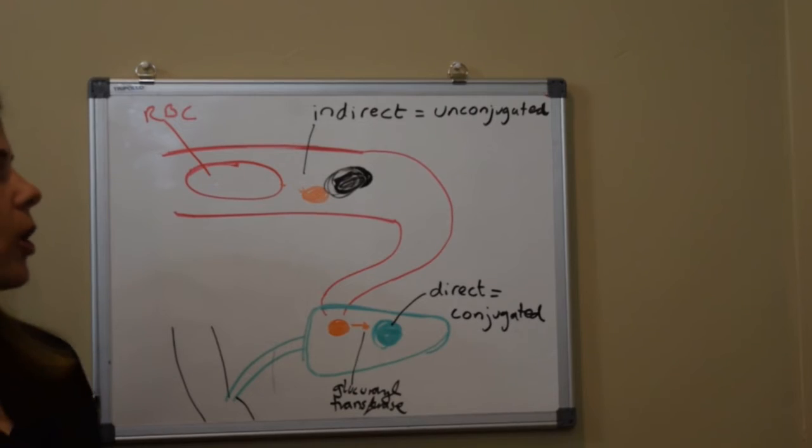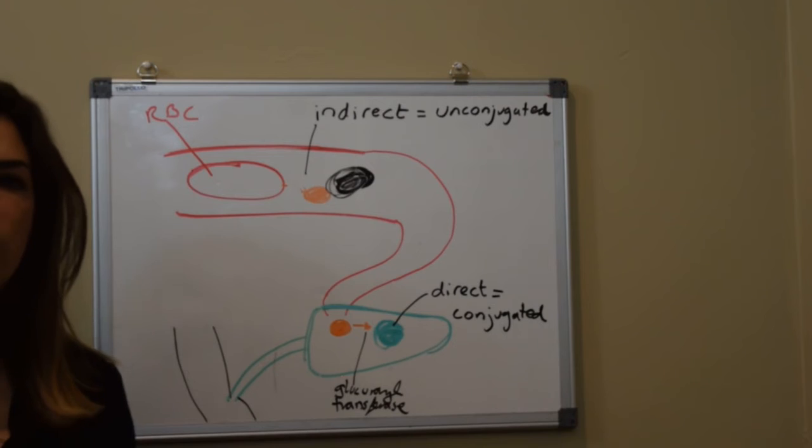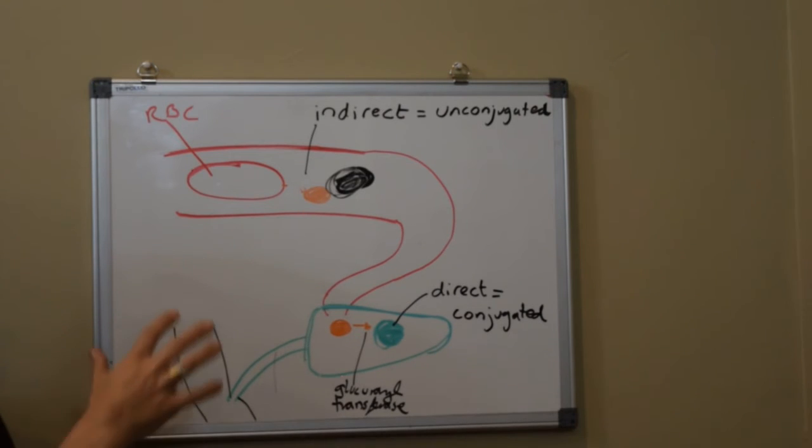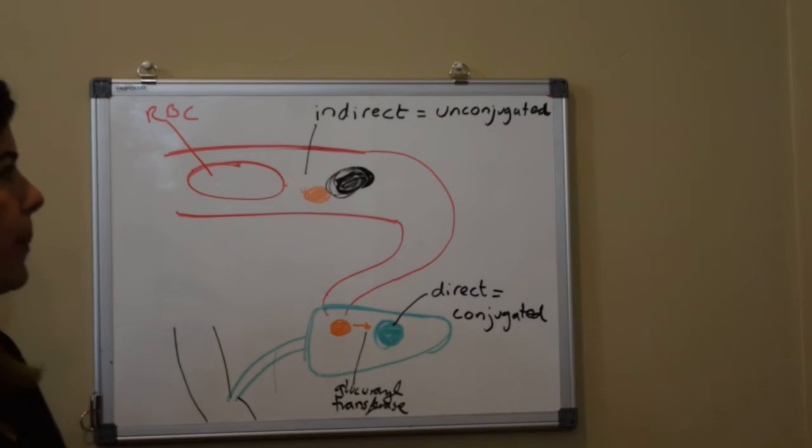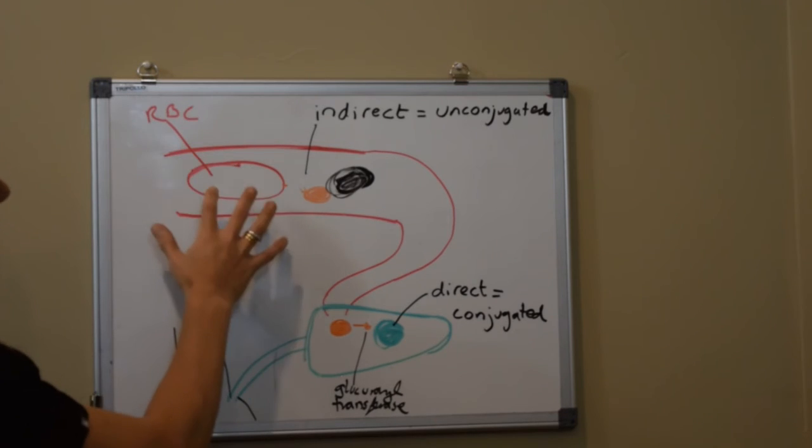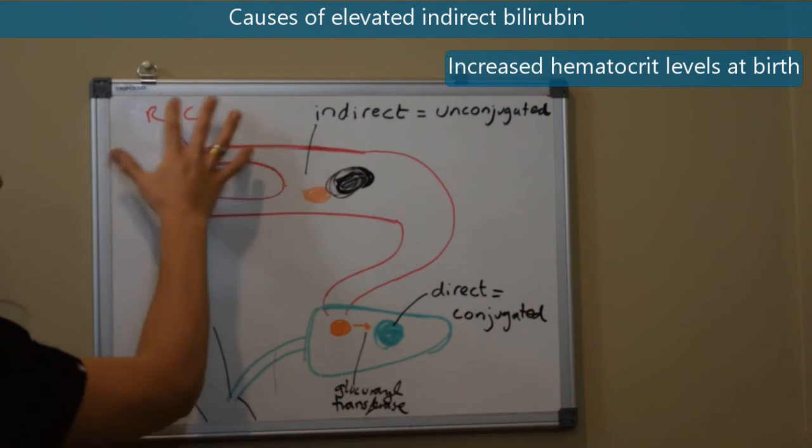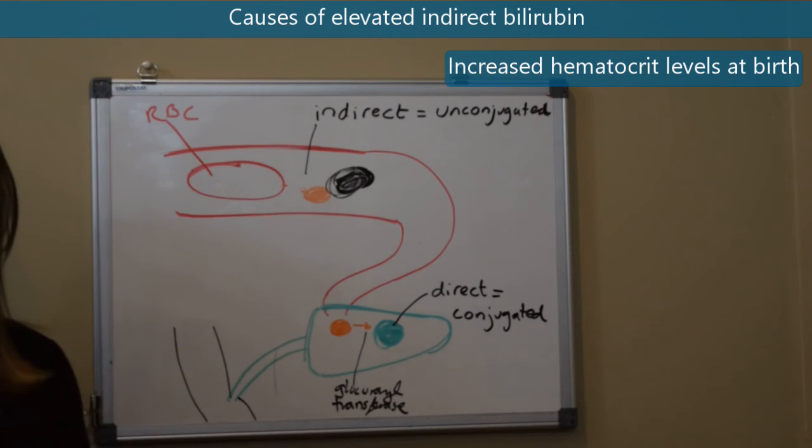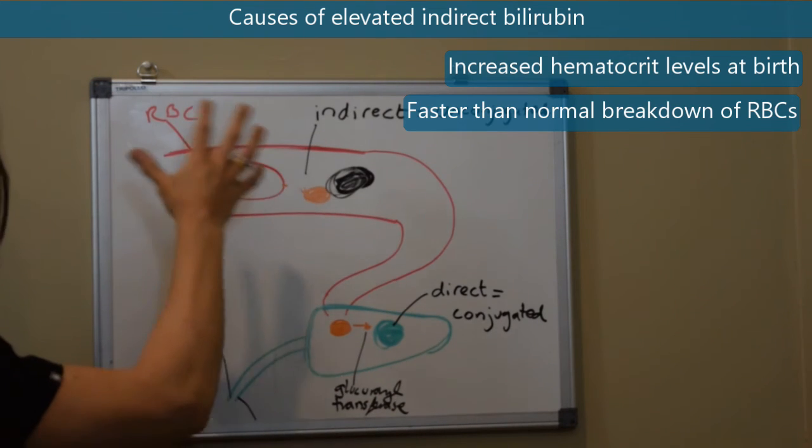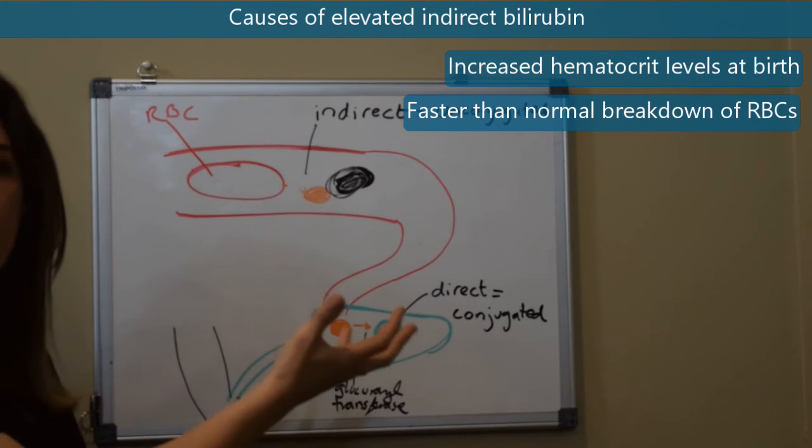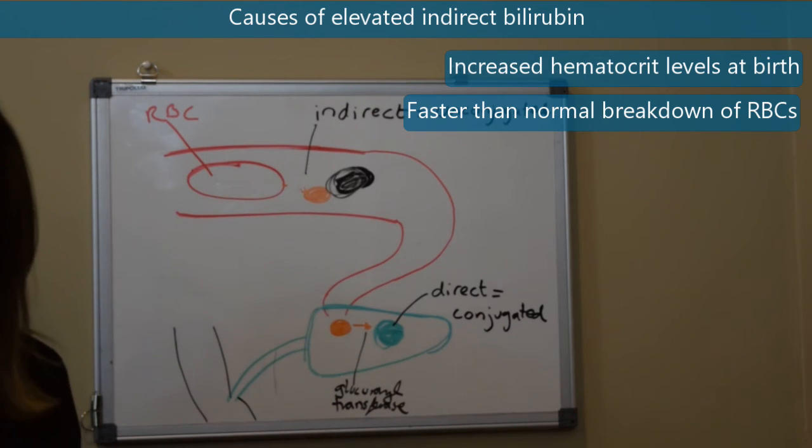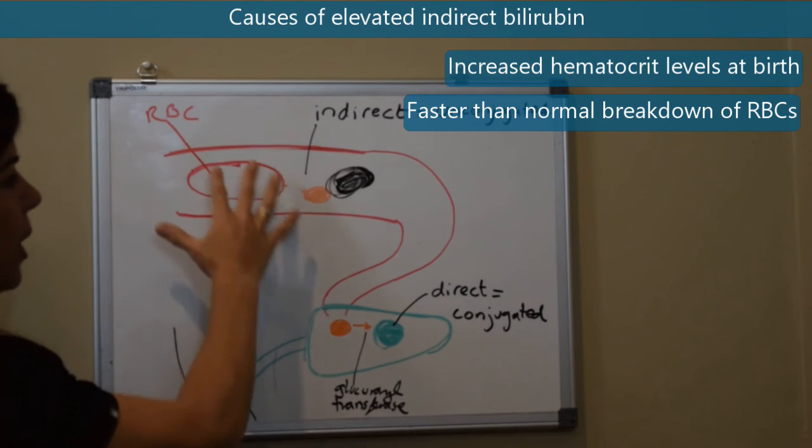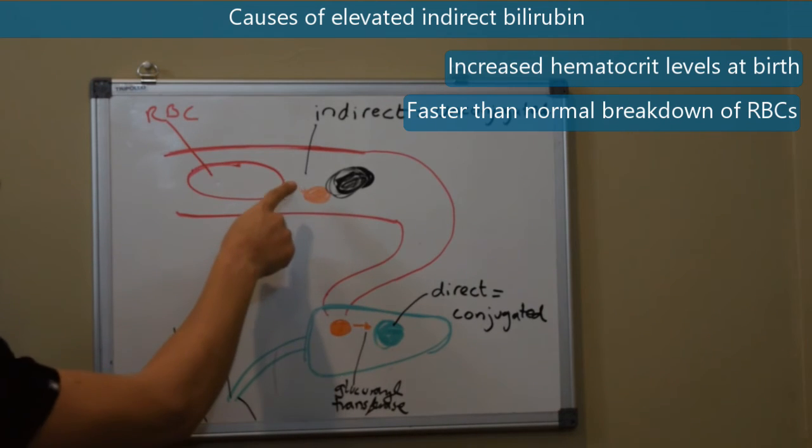I just want to reiterate before we move into the other videos because if you all understand this then it will be very logical as to the different reasons why we end up with elevated indirect bilirubin. Really starting from the beginning we can have a very high amount of red blood cells. A kid is born with a hematocrit of 70, all those blood cells could be breaking down at a faster rate than we'd expect whether it's hemolysis or whether you've got a bleed in the head like a cephalohematoma or something and those red blood cells are breaking down that will release more indirect bilirubin.